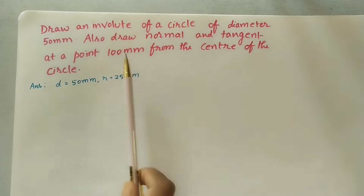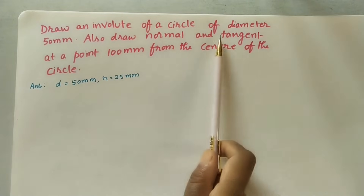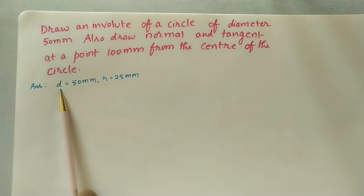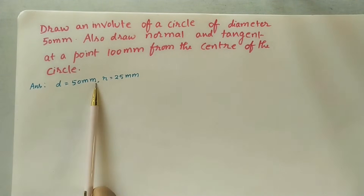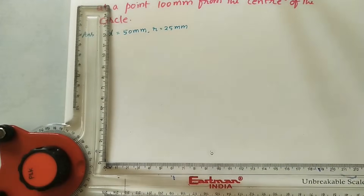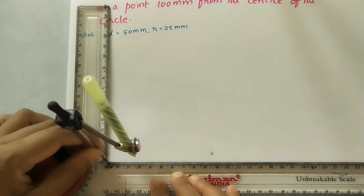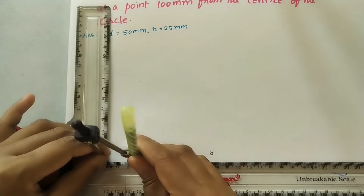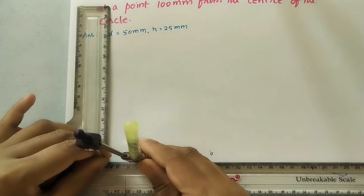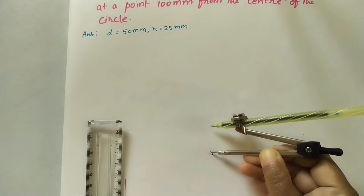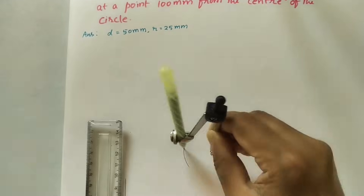First we do the involute, after that we will do the normal and tangent. The diameter of the circle is 50 mm and the radius is 25 mm. By using the compass, take 25 mm radius, then take O as center and draw one circle.